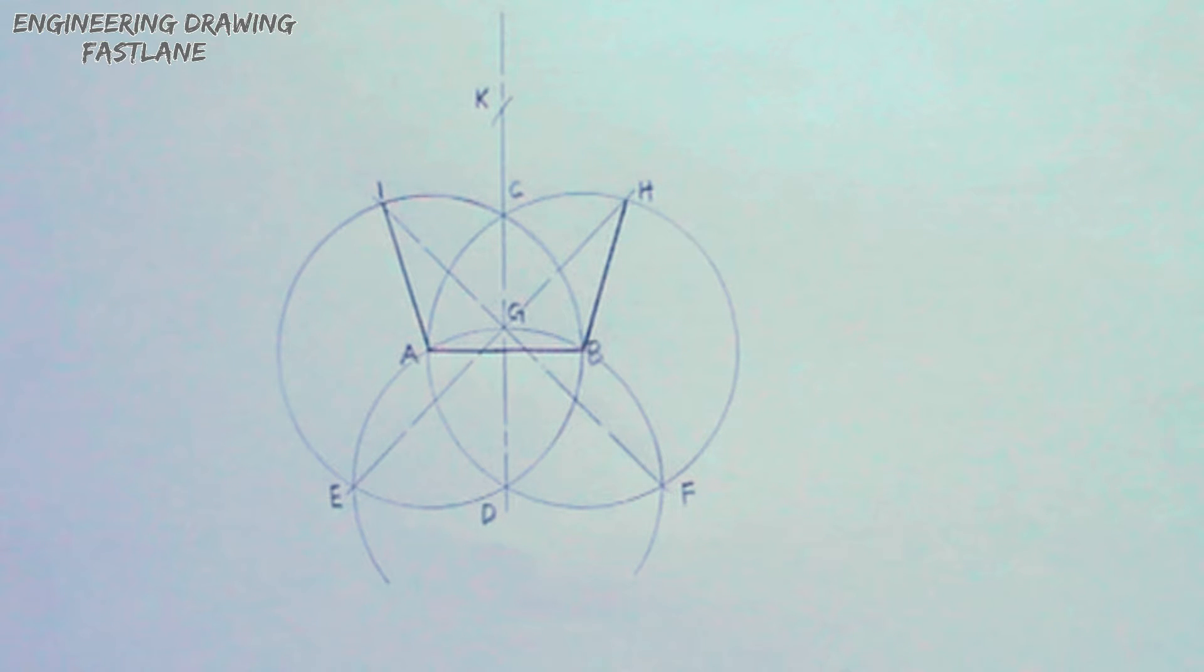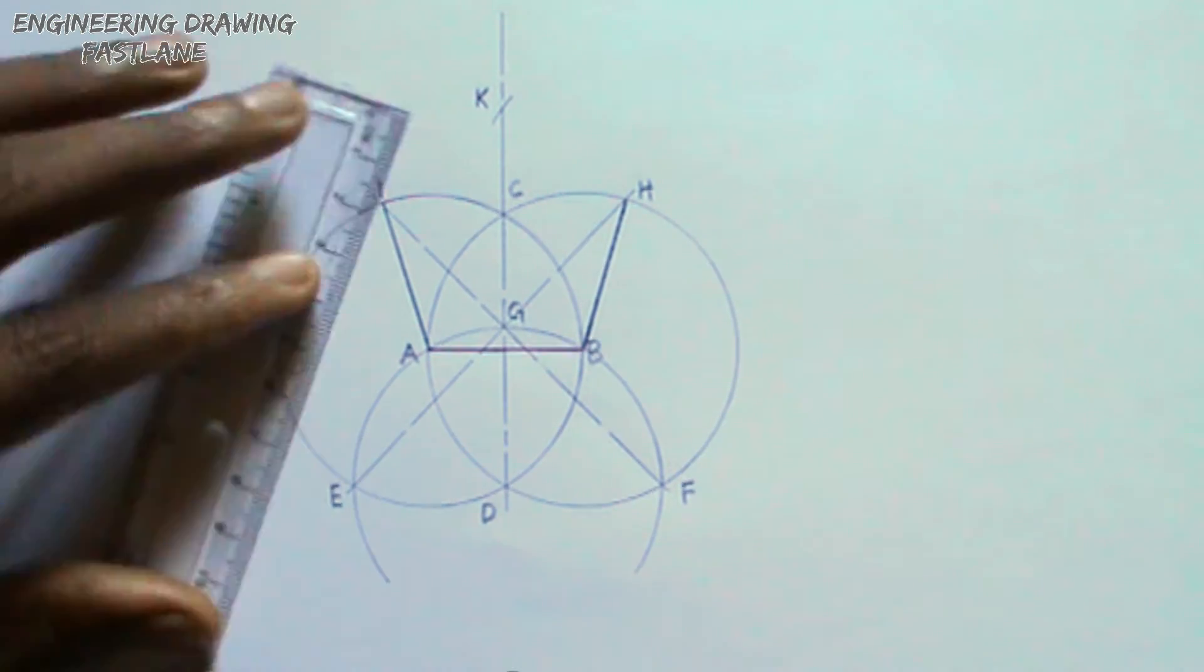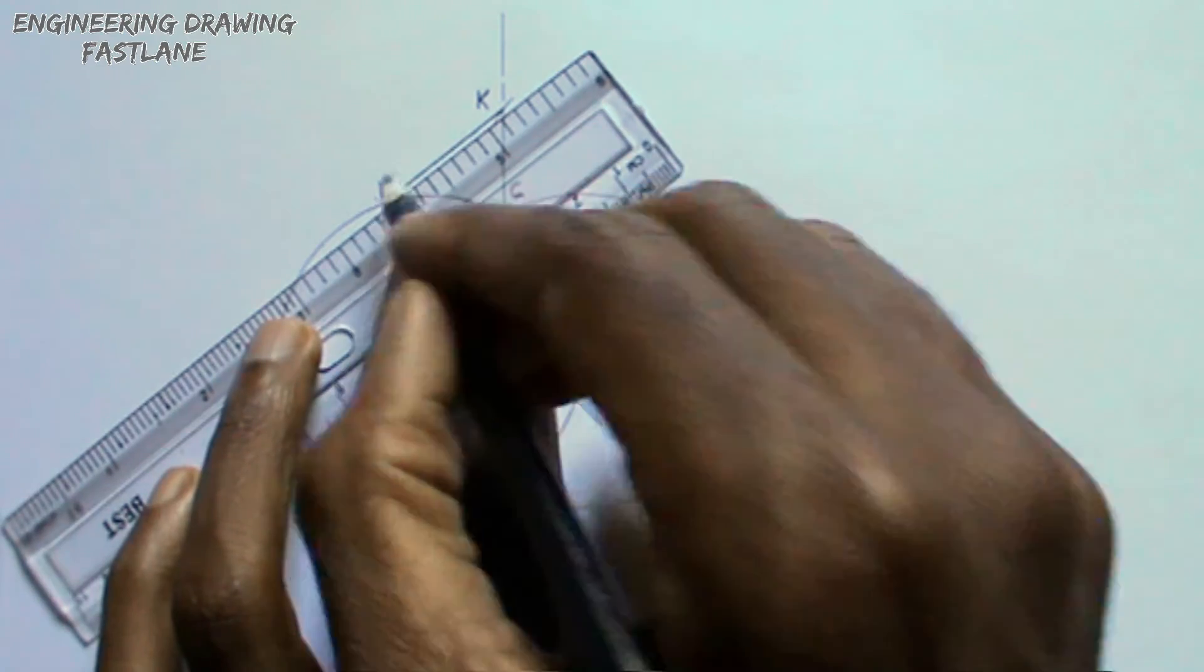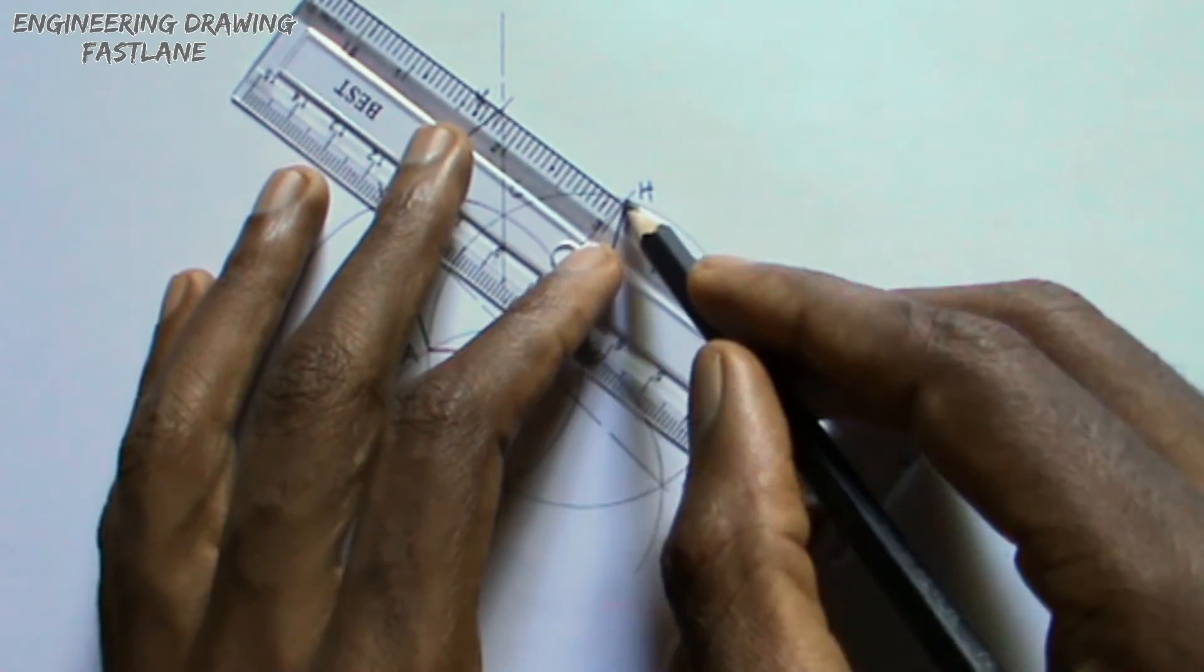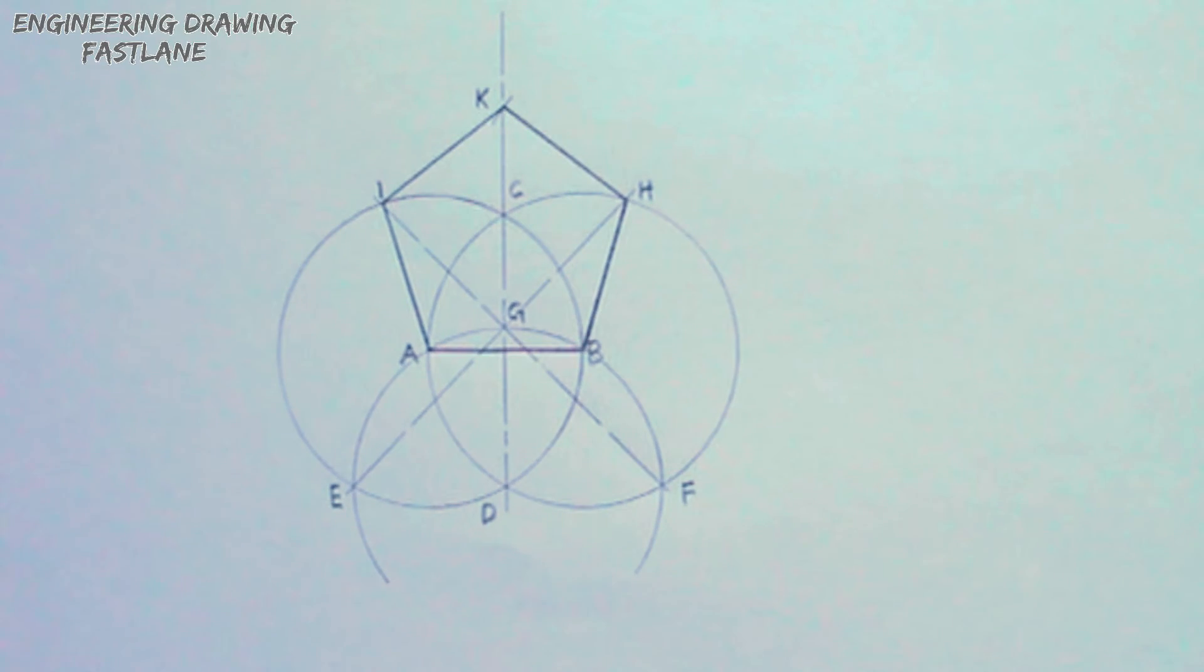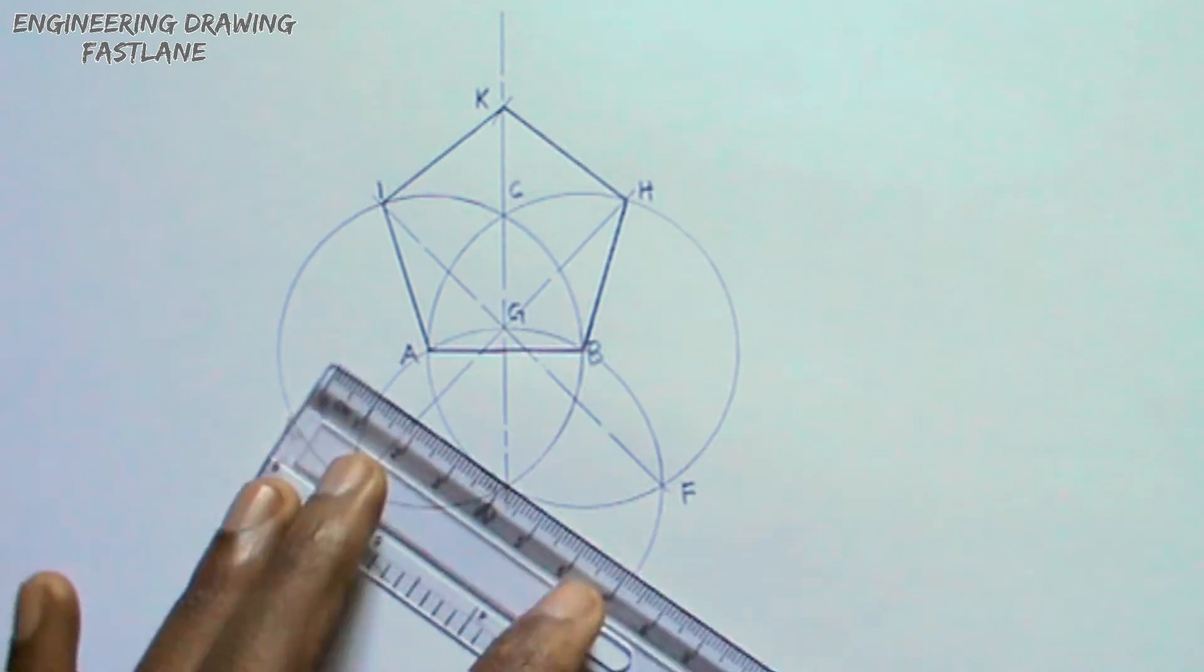I will draw a line joining point H and point K, and another line joining point I and point K. I will indicate the radius of the circles and arcs.